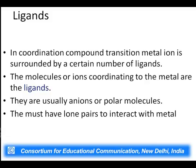Ligands are molecules or ions which coordinate to the metal atom. Because they form a coordinate bond with the metal atom or ion, they must have at least one lone pair of electrons. Generally these are anions or polar molecules; they can sometimes be positively charged molecules also, but they must have a lone pair of electrons to donate to the central metal atom or ion to form the coordinate covalent bond.